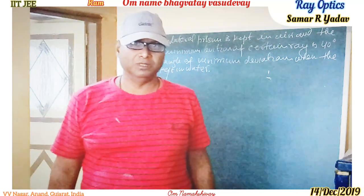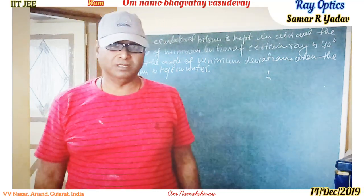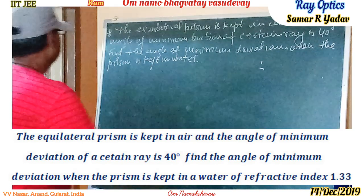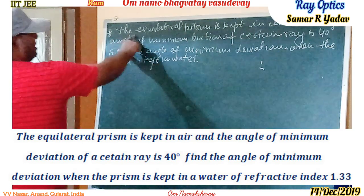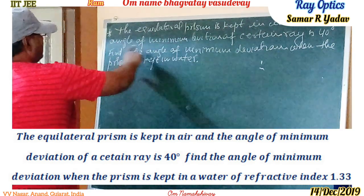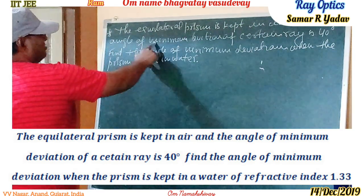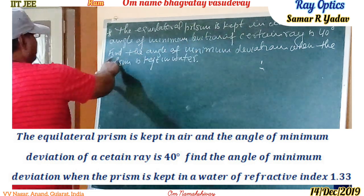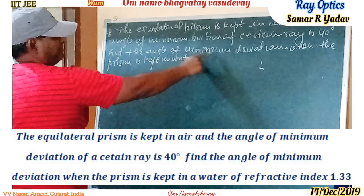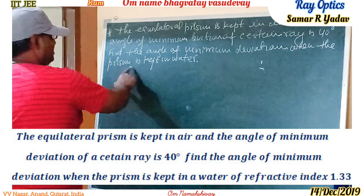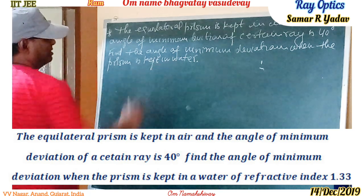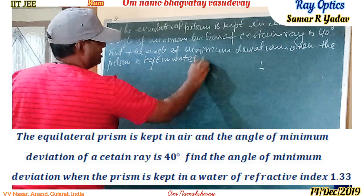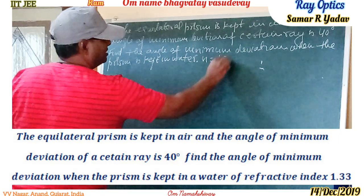Today in ray optics: an equilateral prism is placed in air and the angle of minimum deviation of a certain ray is 40 degrees. Find the angle of minimum deviation when the prism is placed in water. The refractive index of water is equal to 1.33.